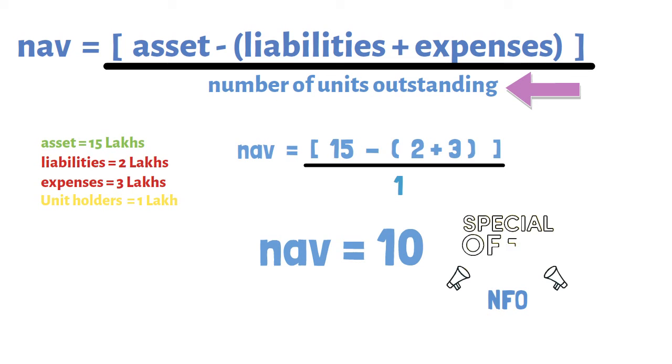Usually you might have seen that the NAV value of an NFO will be 10. NFO is nothing but New Fund Offerings. This is how the NAV is determined for a particular mutual fund.